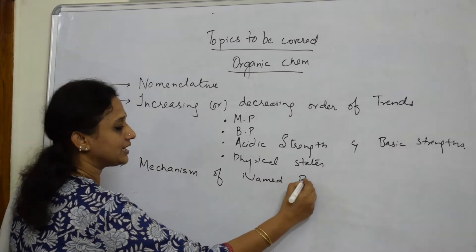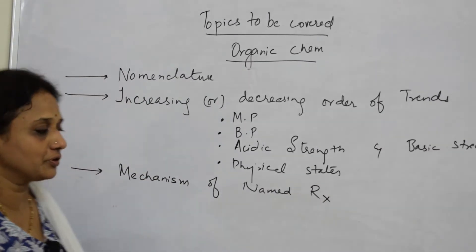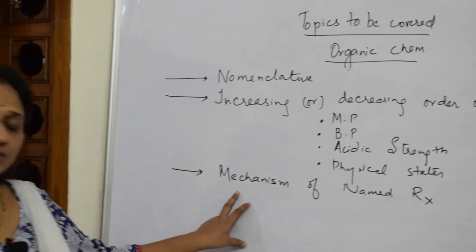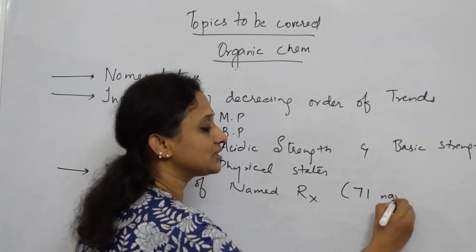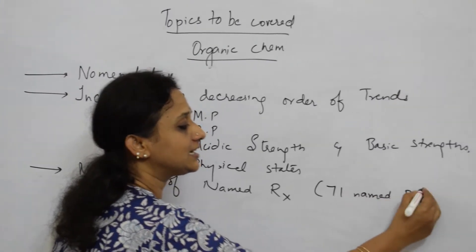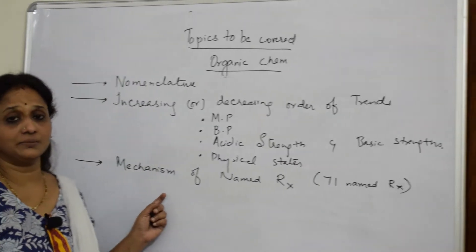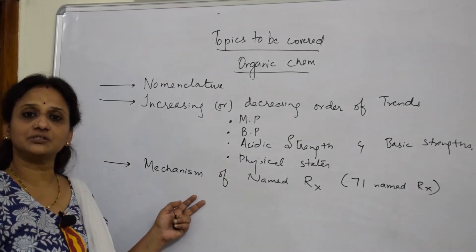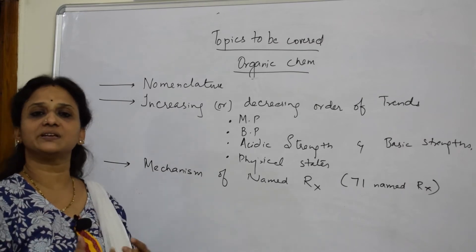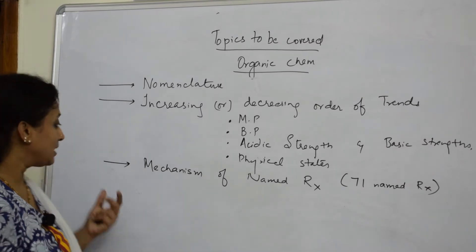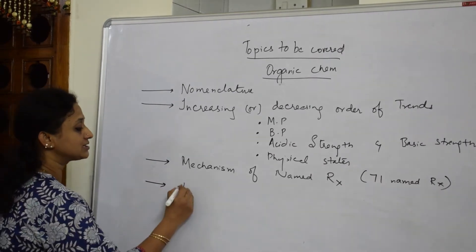Next, questions are stressed on mechanisms of name reactions. We have almost 71 name reactions in the NCERT/CBSE book prescribed for Grade 12. You should know the mechanisms of each and every name reaction — most of them build on the foundation from Class 11.